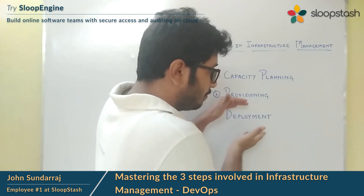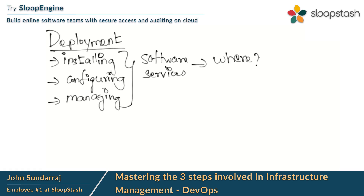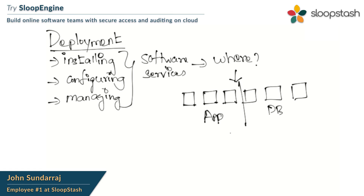Now let's move on to the third step: deployment. Deployment is the process that falls after infrastructure provisioning. It is the process of installing, configuring, and managing software services on servers — you can manage multiple or single software services across multiple or single servers. We need to ask where we are going to deploy. We are going to deploy the software services on the provisioned infrastructure, where some fleet of servers will be for application servers and some for database-related services.